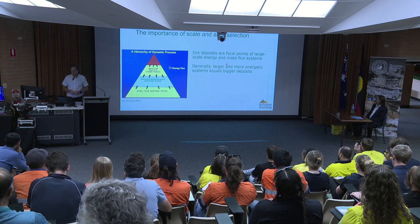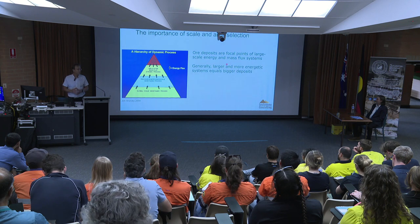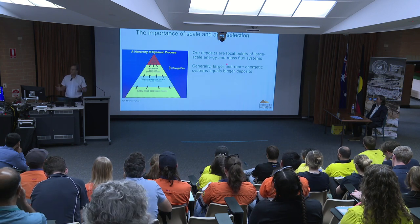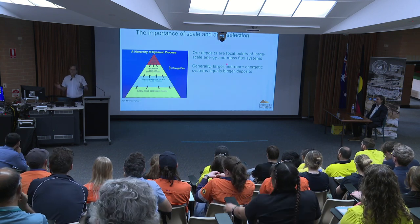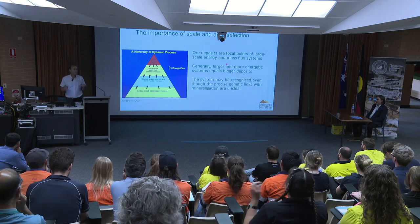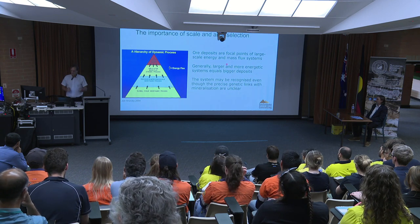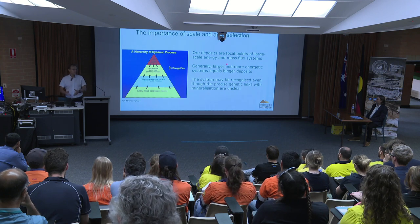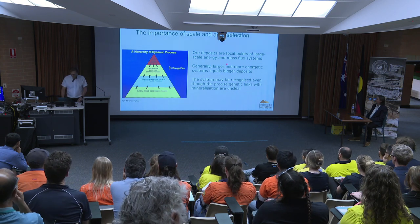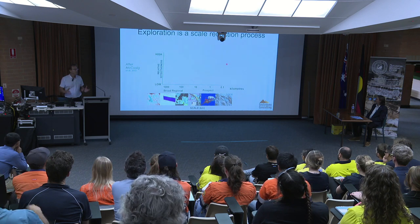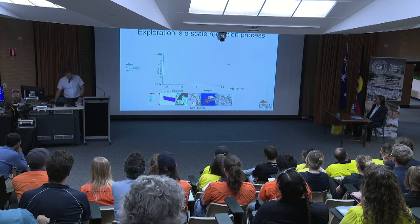Generally, the larger and more energetic systems mean the bigger deposits like the super pit, which is a good thing for an explorer because the signals, the footprints, are generally larger. And so the tools that we're able to use allow us to identify these elements of the system. One of the challenges, though, is we're often dealing with fuzzy things — things that are deeper and broad scale. We may not be able to recognise the precise genetic links with the mineralisation at the super pit. Nevertheless, these methods and the datasets and the approaches are valid.